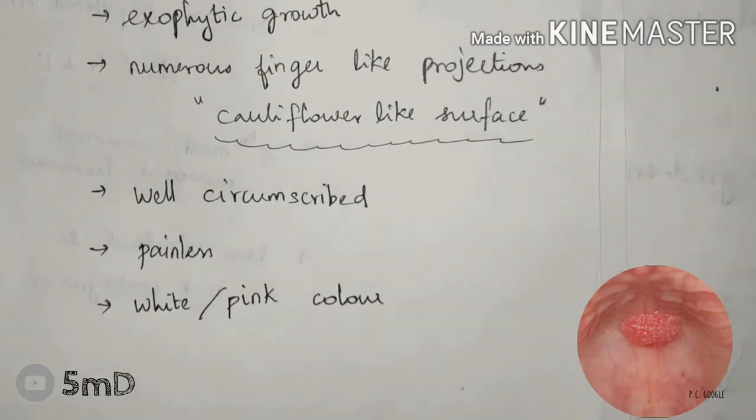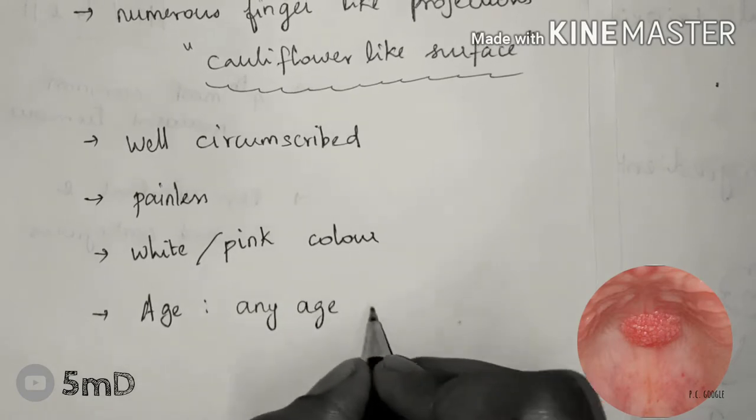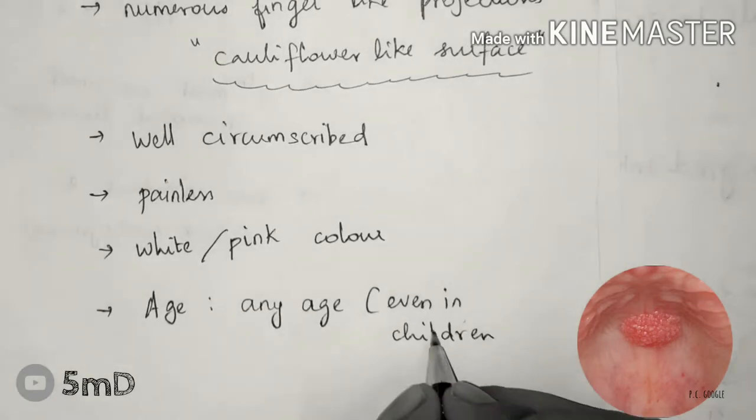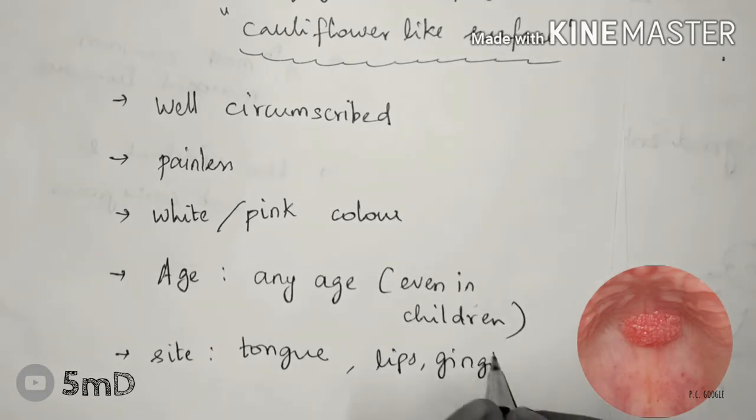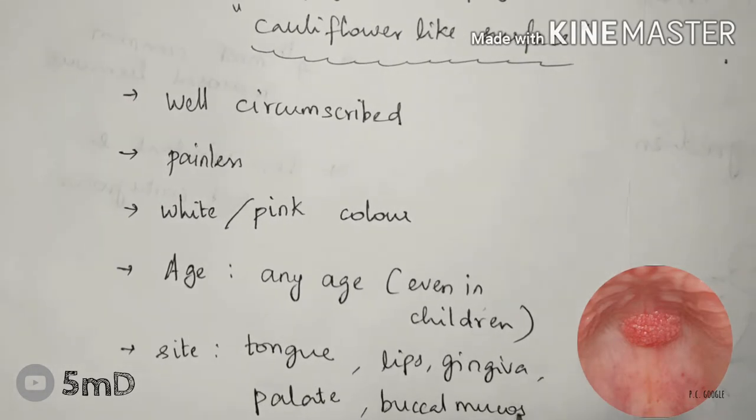Papilloma is painless, it can be white or pink in color. It can be found in any age group and also in children. The common sites include tongue, lips, buccal mucosa, gingiva, and palate.